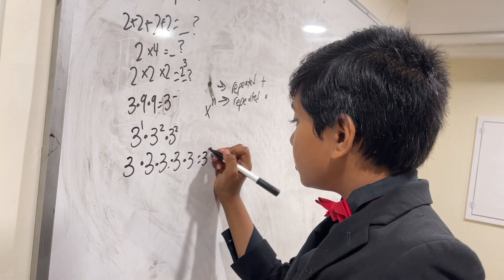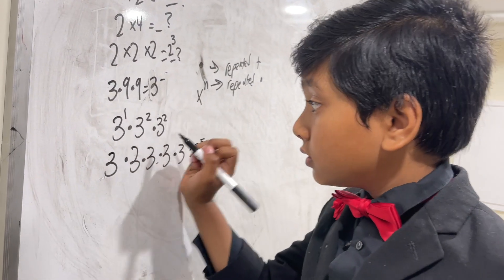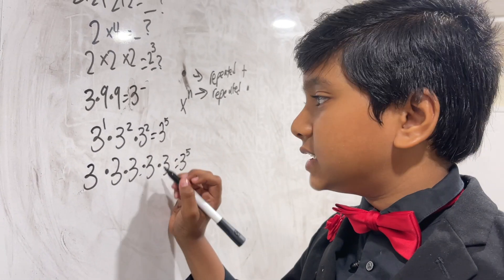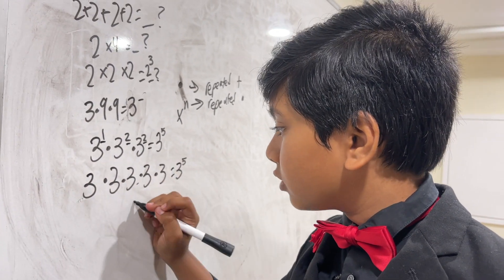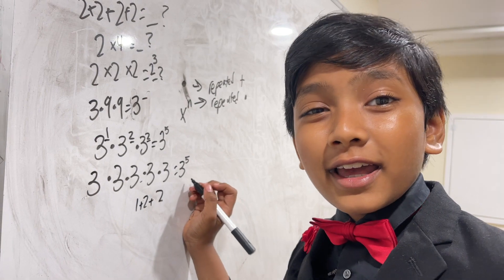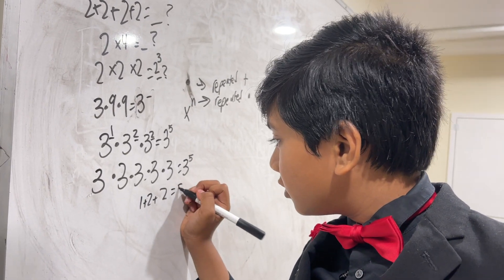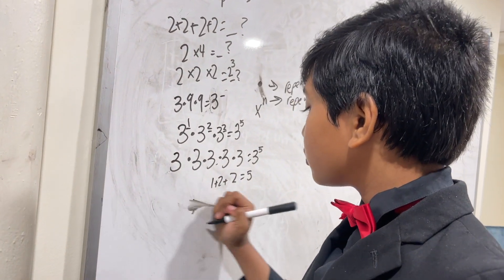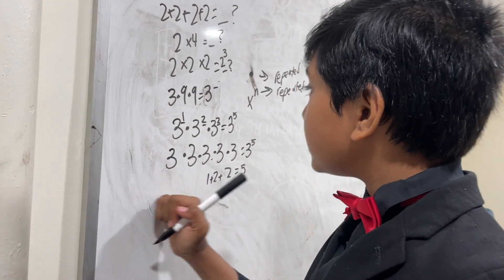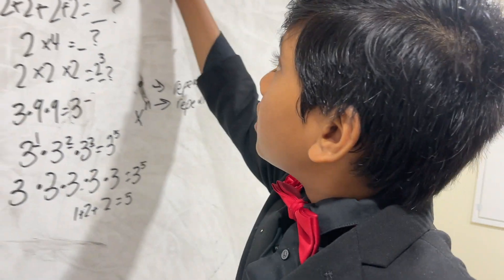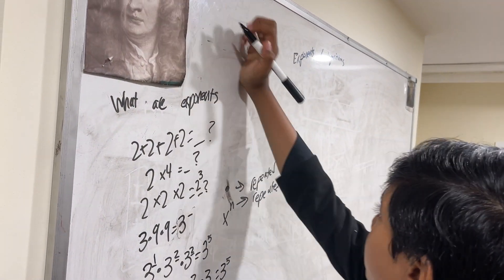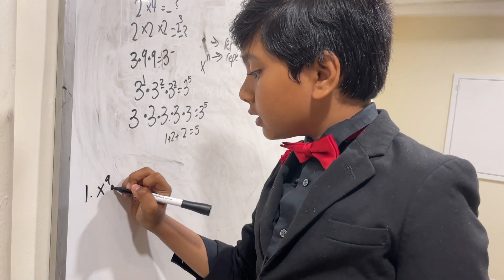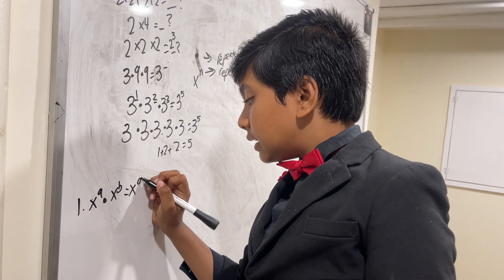There are five threes, so this is three to the fifth. And notice: one plus two plus two equals five. This works for any number — we've discovered the first rule of exponents: x to the a times x to the b equals x to the a plus b.